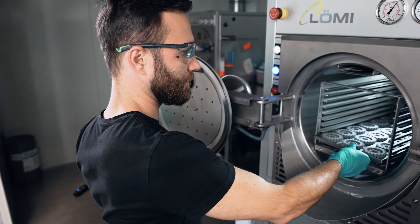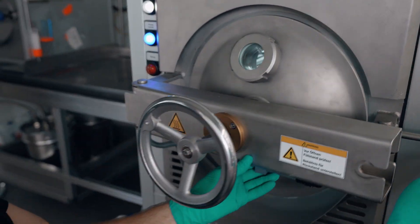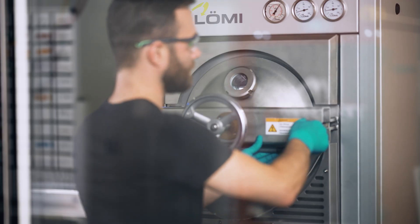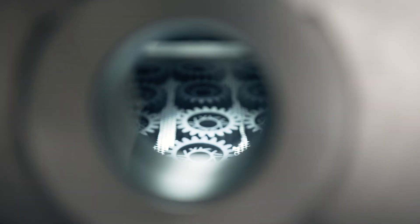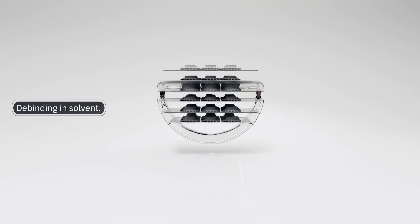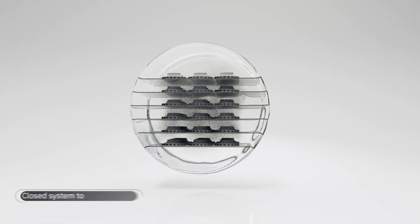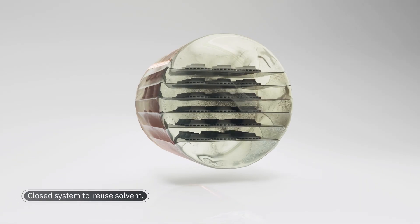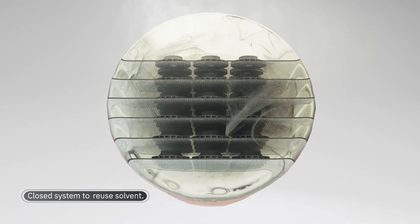Once we're done in the green part stage we use the debinding station and turn the part into a brown part. Inside the debinding station, once the door is closed and all the trays are loaded, we flood the chamber with solvent. What's happening under the microscope is that the solvent is starting to penetrate the walls of the parts and starts to suck out one of the plastic components we have.